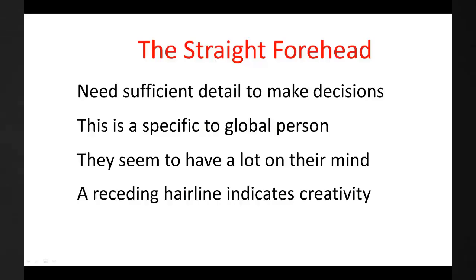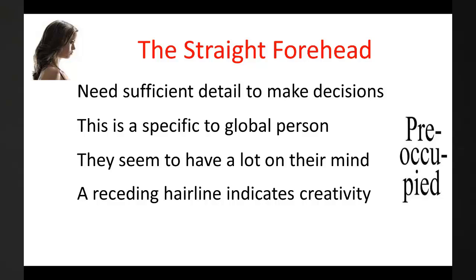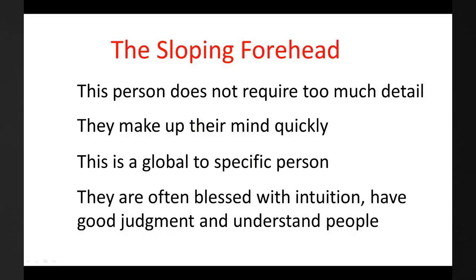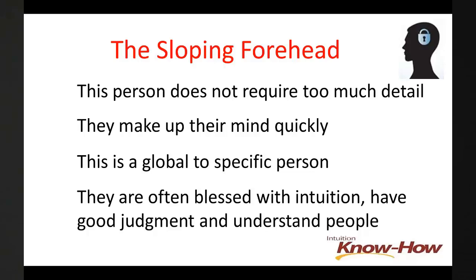If the forehead is relatively straight, you are dealing with a person who prefers to have sufficient detail and time for consideration before making up their mind. This is a specific-to-global person. They will give a decision a lot of thought, particularly if it has significance, and they always seem to have a lot on their mind. A receding hairline indicates additional creativity. A sloping forehead has the opposite characteristics — this person does not require too much detail. They make up their mind quickly. This is a global-to-specific person. They see the bigger picture and are often blessed with intuition, good judgement, and an understanding of people.